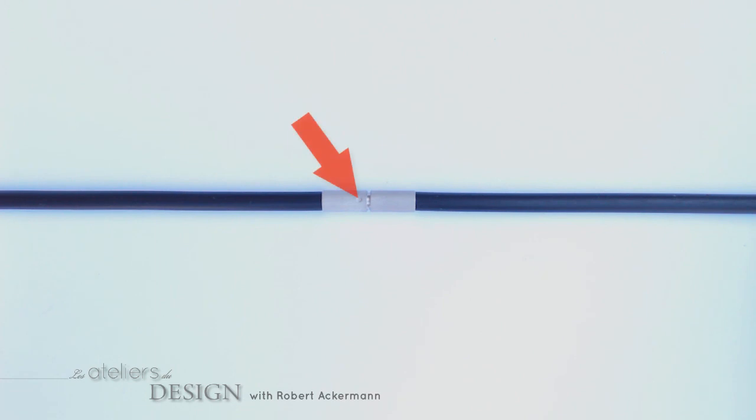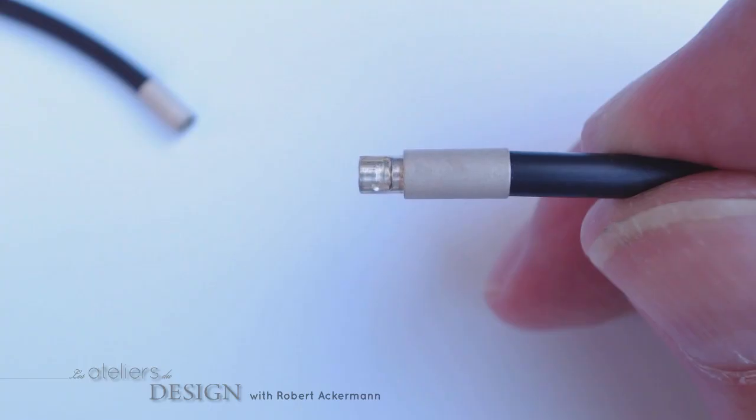This dimple here in the female part runs in this groove in the male part. It actually takes the path you see here. Doesn't it remind you of the shape of a hook?